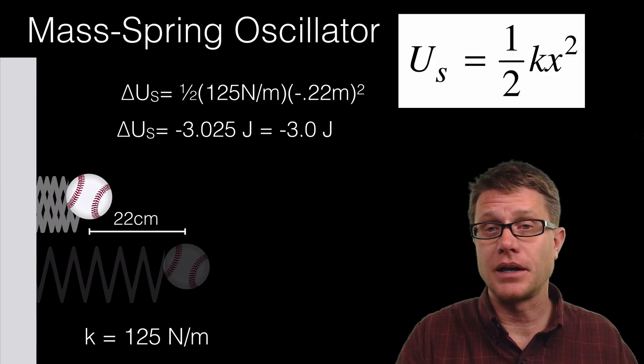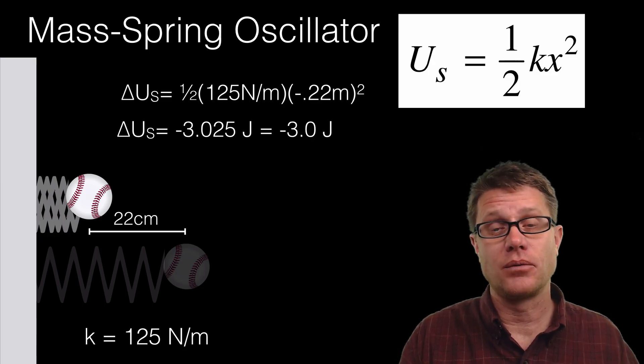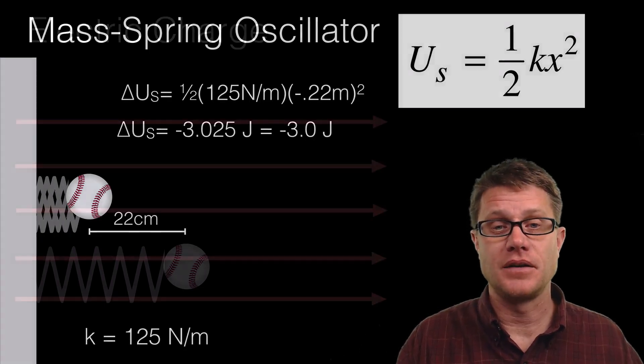If I plug that in my equation and figure out significant digits, I have done negative 3.0 joules on that baseball. So when I let it go we are going to get that work back. We are going to get that energy back out of the system.